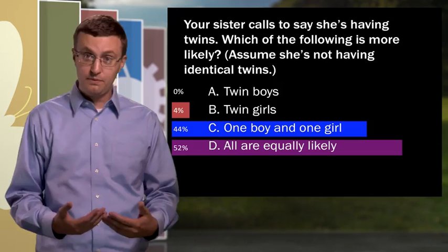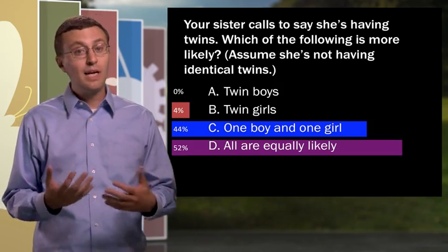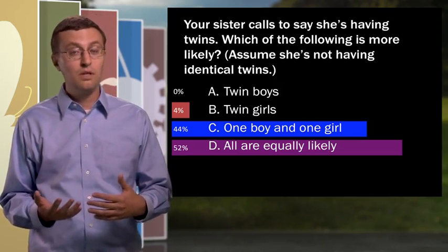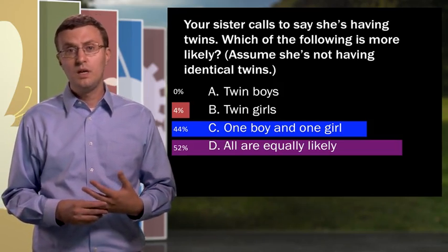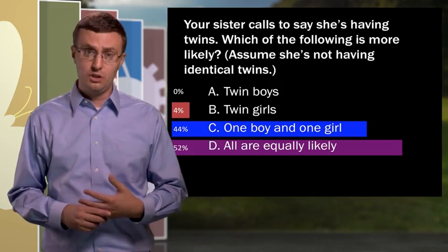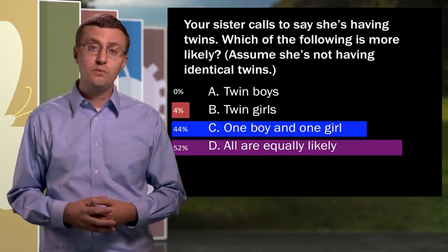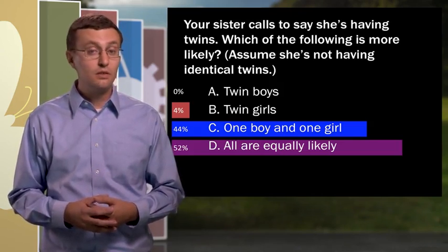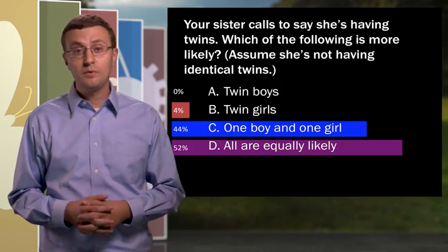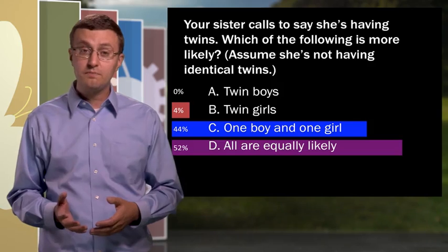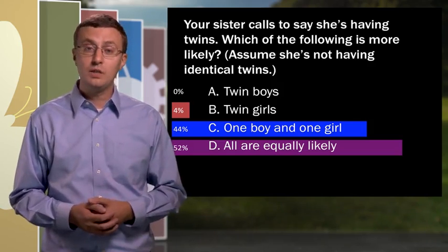I'll show them the bar graph showing the split, then have them pair up and discuss the question, then vote again using their clickers. The distribution of answers will usually change a little, then I'll ask a few students from each camp to explain their reasoning to the whole class. We hear from the one boy and one girl proponents, and we hear from the all are equally likely voters.